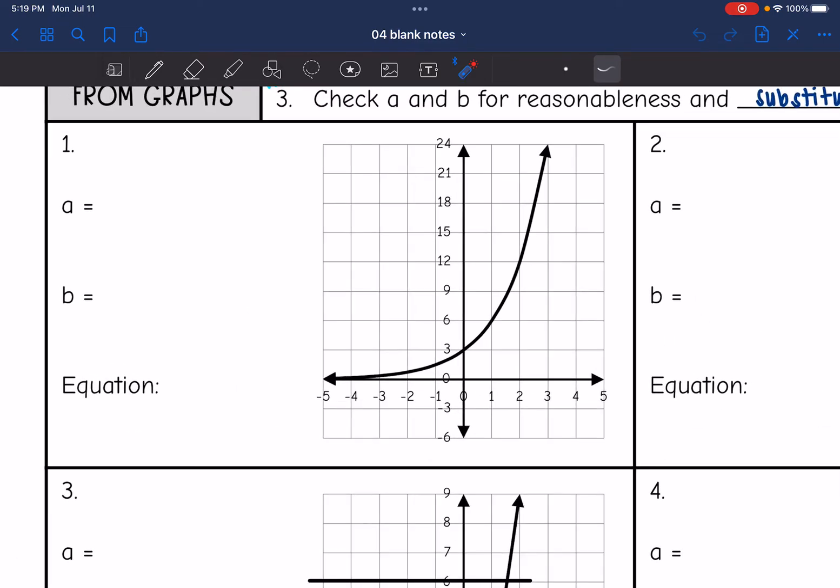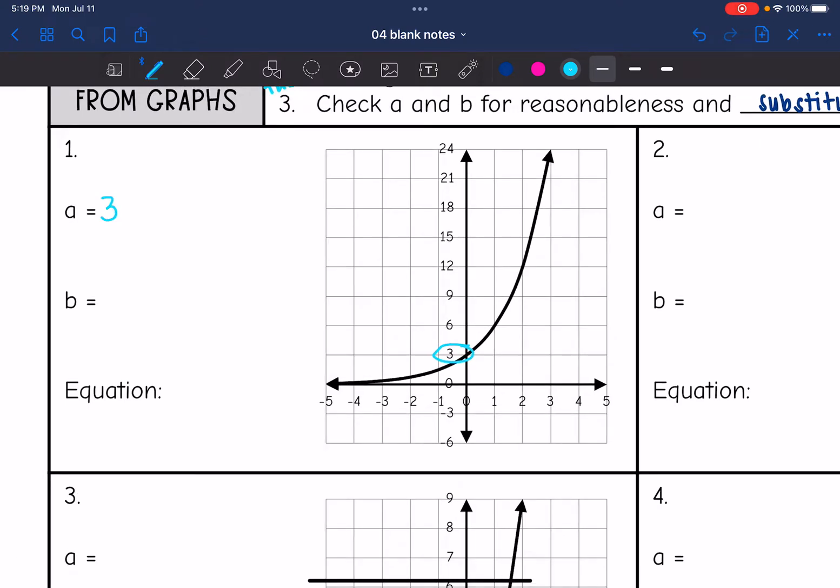So let's look at number one. Let's start with the y-intercept. That is three. And then I need to find b by doing y2 divided by y1. The y-intercept is a good point to use because you already identified that. And then we have to do consecutive points.